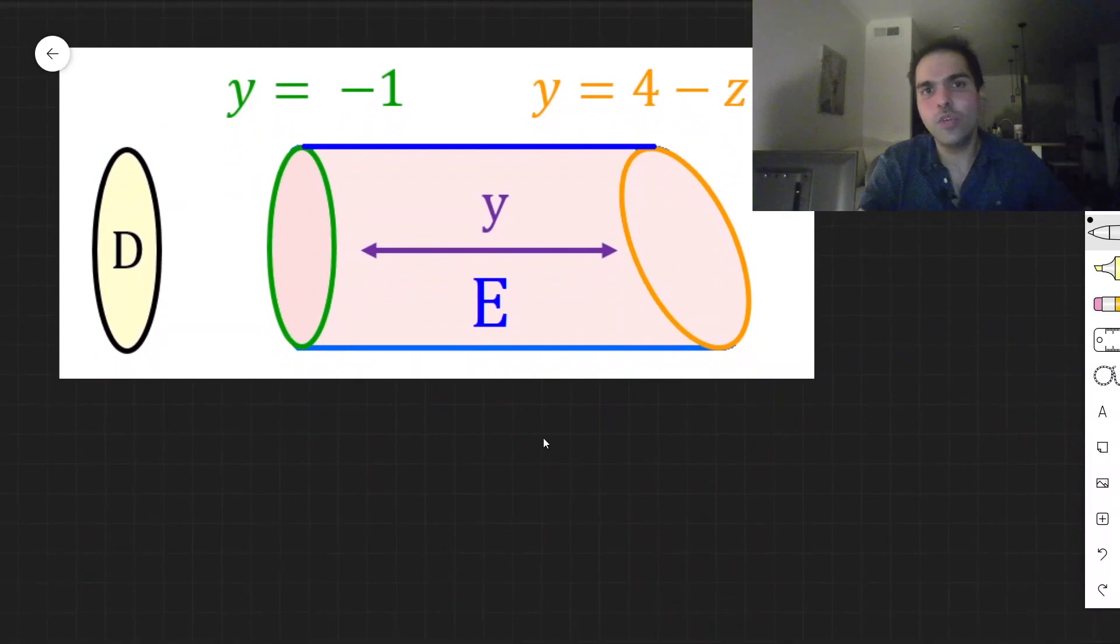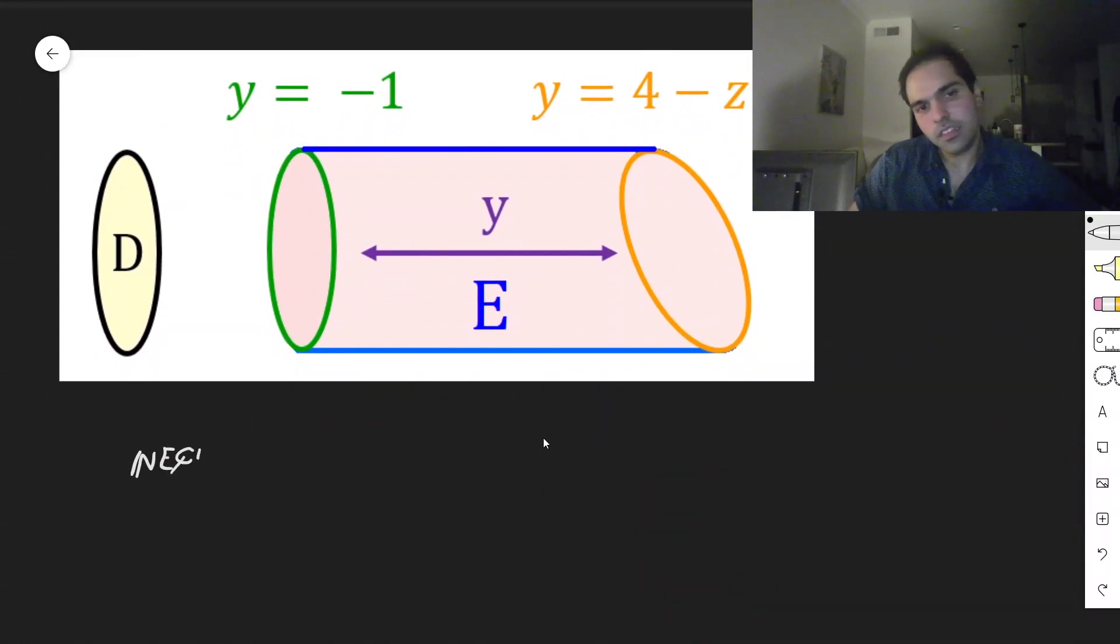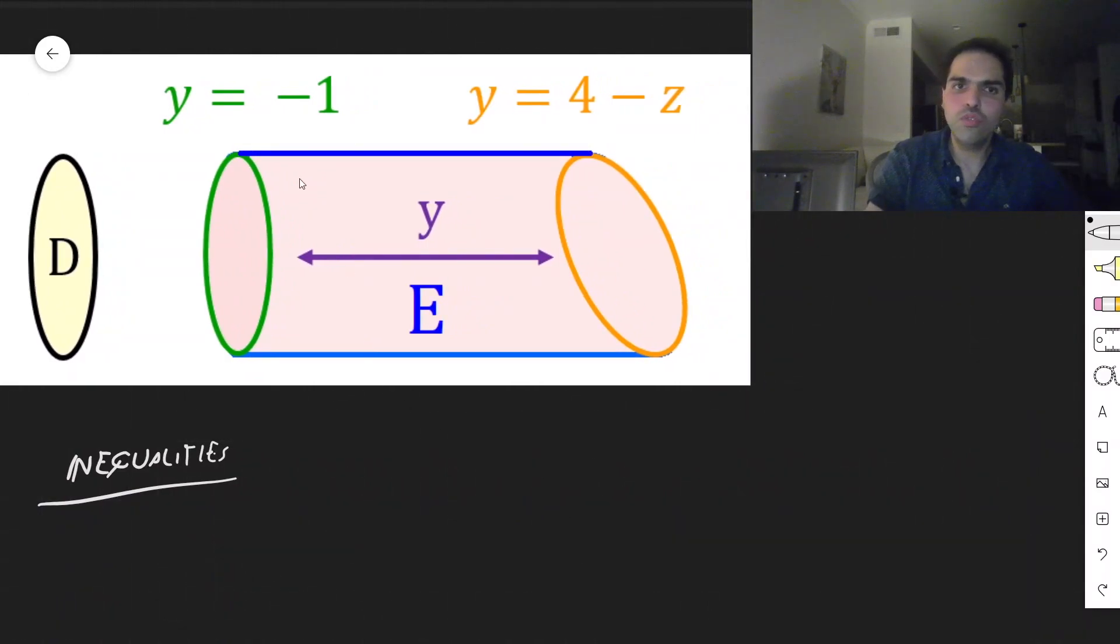And now what we want to do, we want to find inequalities. And essentially now notice, this is kind of a cylinder put to sleep. So it is in the y direction. And usually what you want is z between small and big. But now the only difference is, you want y to be between left and right. So y is squeezed between minus 1 and 4 minus z.